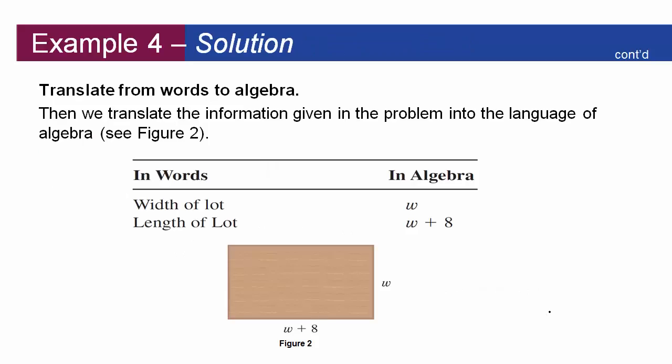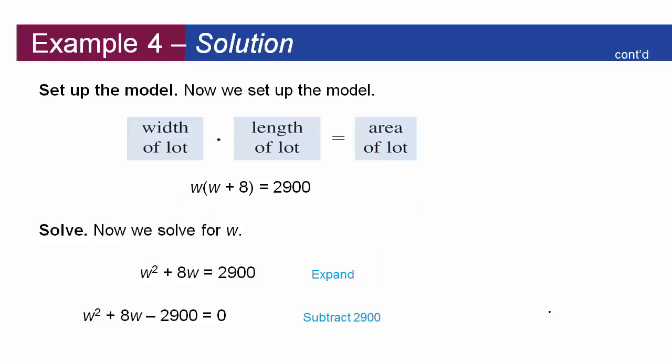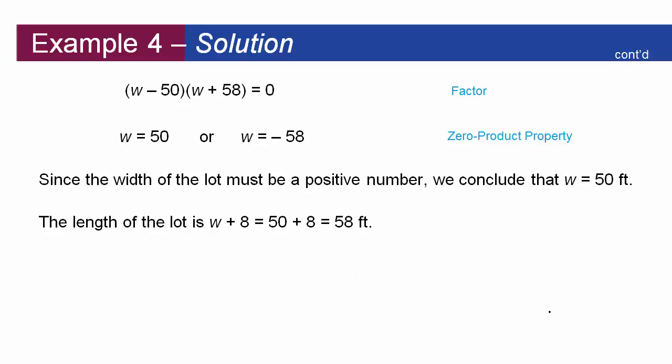Alright so here's my picture, here's my length and my width. Translating things, set it up this way. Subtract it, set it equal to zero just like we said. And then depending on how good you are at factoring you can hopefully factor it. If you can't you can use a quadratic formula.